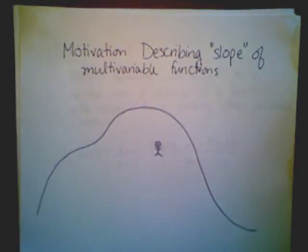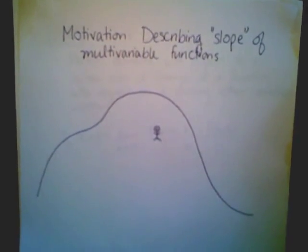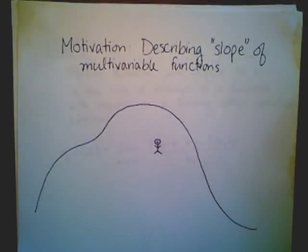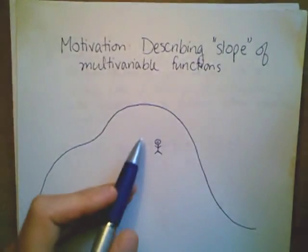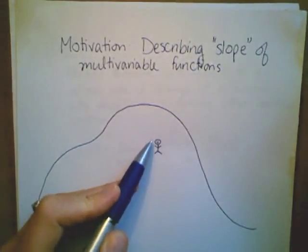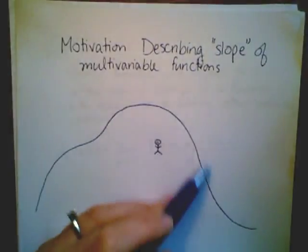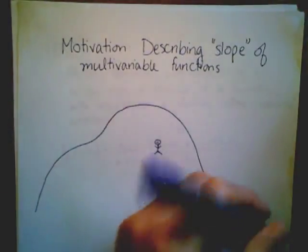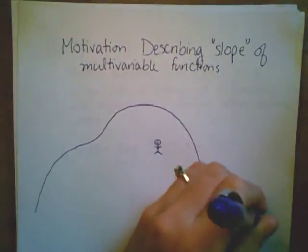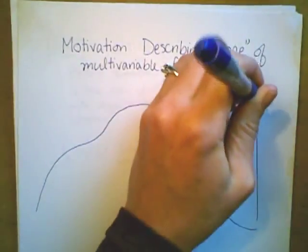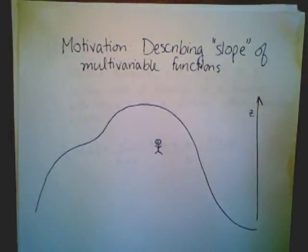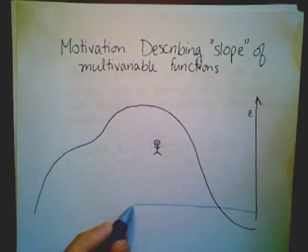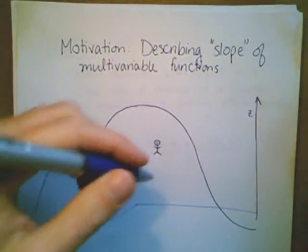Let's start with our motivating piece, and we're going to describe the slope of multivariable functions. Suppose that you're this little person standing on this hill, and this hill represents our multivariable function, where our z-axis is going upwards and our xy-axis is down somewhere on the ground, right underneath this hill.